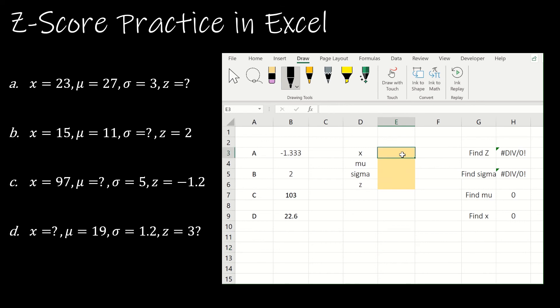So for c, x is 97. μ is unknown. So we just leave it blank. Don't put a zero or anything else. Sigma is 5. z is negative 1.2. And we're trying to find μ. And μ is 103. And that's what we found. So again, to do this, you need to know which value you're trying to find to know if you're correct or not. And then when you start the next question, just make sure you clear everything out. And then for the last one, x is unknown. That means we're trying to find x. μ is 19. Sigma is 1.2. Z score is 3. And notice x is 22.6. So we have all the same answers that we did by hand. And we've let Excel do the work.